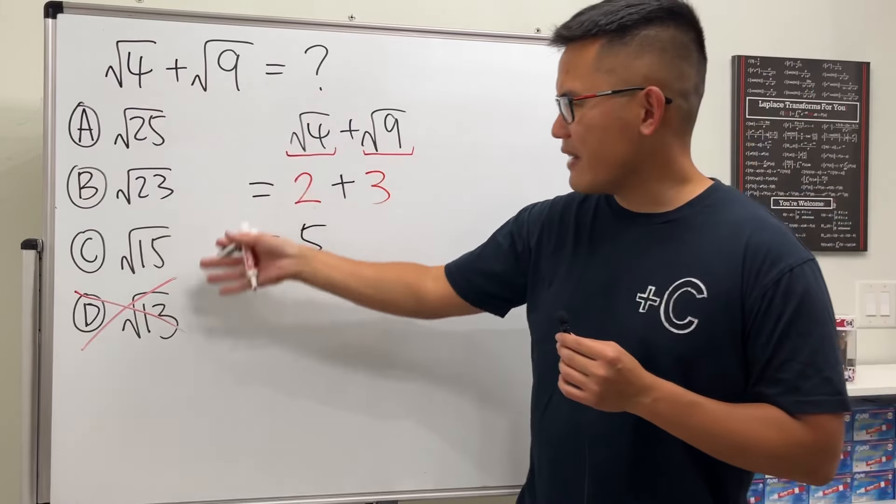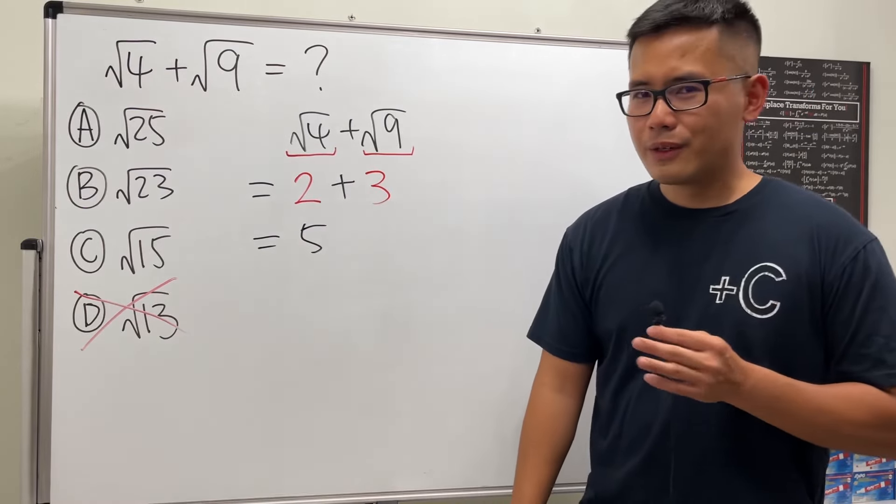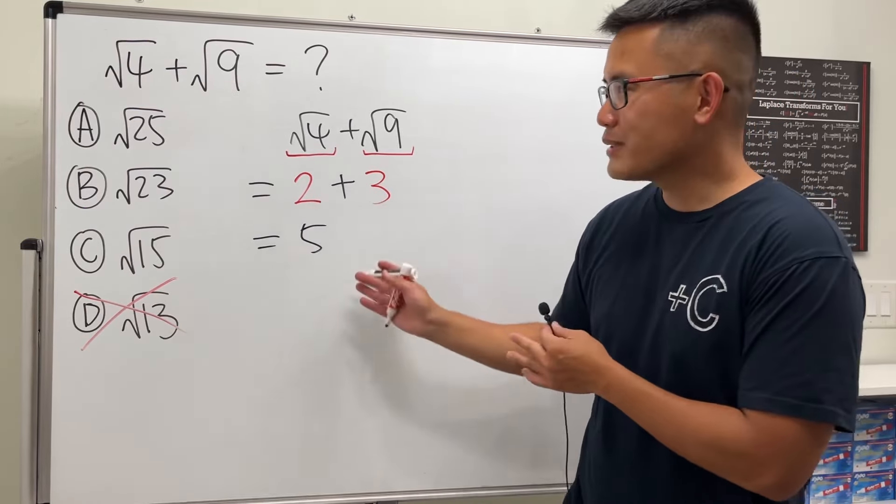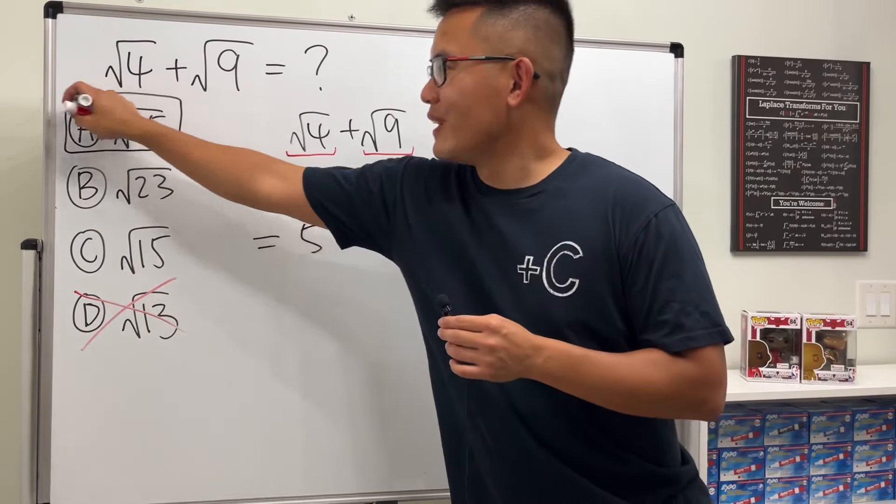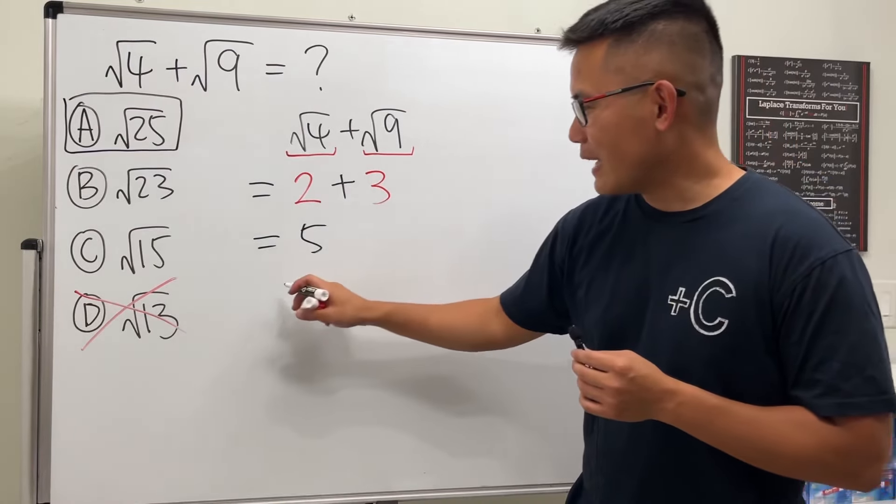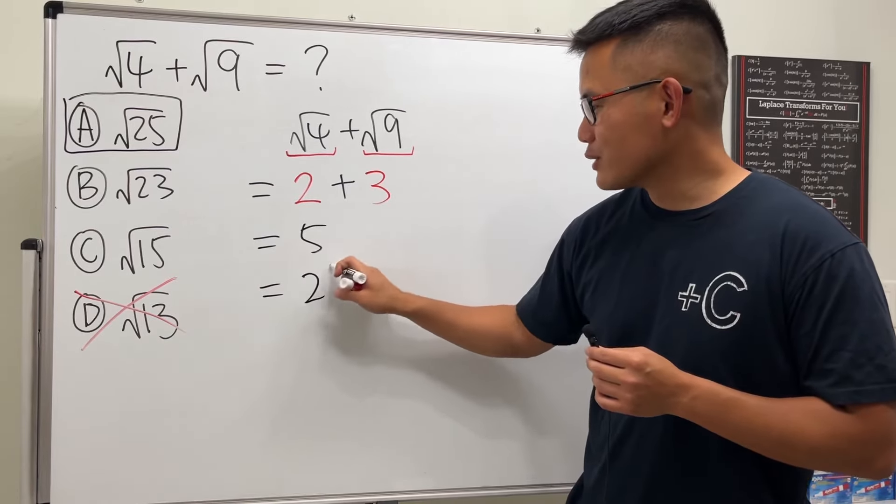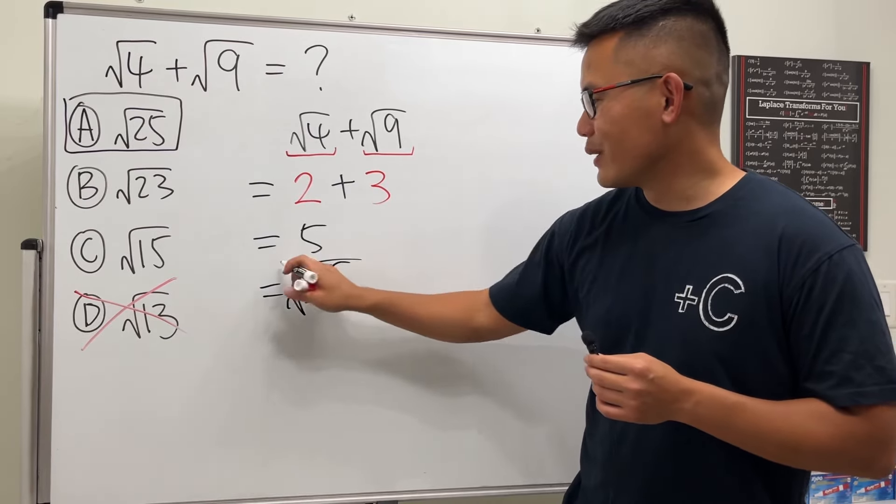Oh no, I don't have 5 here, so anything wrong? 5 is actually the same as choice A. Square root of 25 is 5, so 5 times 5 is 25. So this right here is just 25 with the square root, so the answer is choice A.